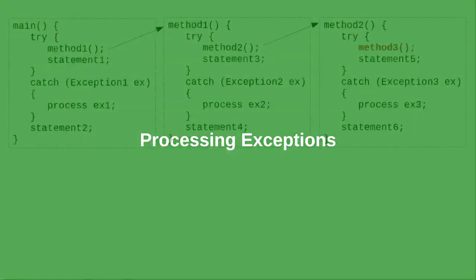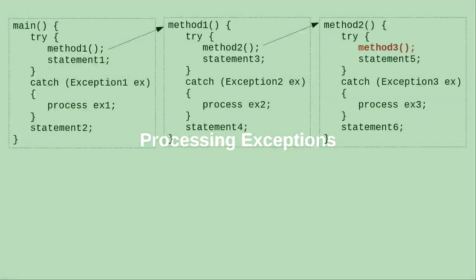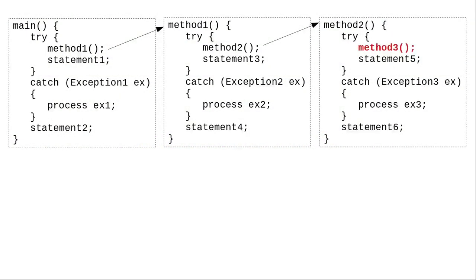Let's see how Java processes exceptions. Presume we have a program where the main method calls method 1, which calls method 2, which calls method 3. Main, method 1, and method 2 each catch a different sort of exception.